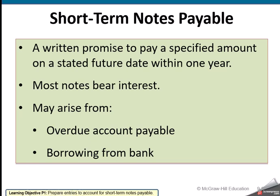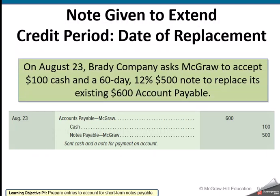Short-term notes payable is similar to accounts payable — it's something we owe — but we're going to have to pay interest on it. In this example, Brady Company asks McGraw to accept $100 cash and a 60-day, $6,500 note at 12% interest to replace its existing $600 accounts payable. Brady can't pay right now, so they're asking for 60 more days and agreeing to pay interest. We take it out of accounts payable and put it into notes payable.